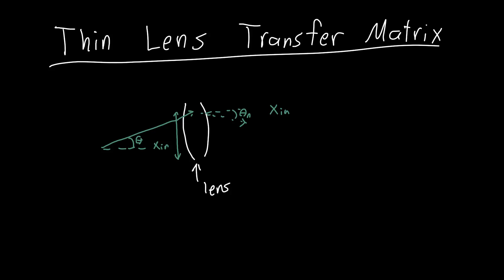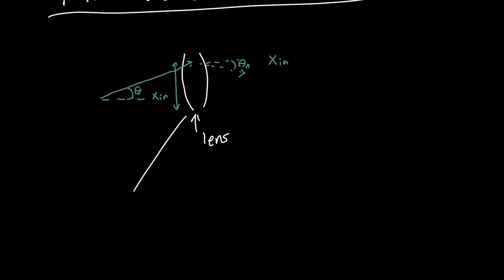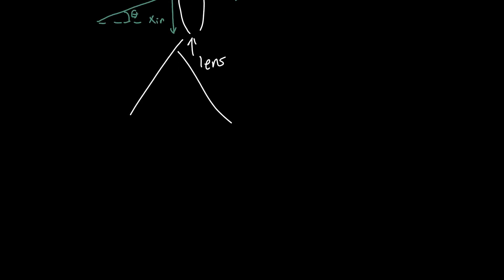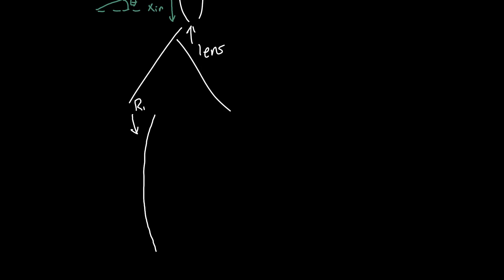You might ask, how are we going to figure this out? Well, what is a lens first of all? Let's zoom in on this thing called the lens and we'll see that it's some curved surface, usually a spherical curved surface just because they're easier to manufacture, with some radius of curvature R1, and then some other curved surface with maybe a different radius of curvature, maybe the same one, R2.